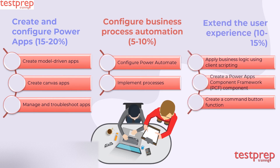Domain 5: Extend the user experience, which comprises 10 to 15 percent weightage in the exam. It includes: 1. Apply business logic using client scripting. 2. Create a Power Apps component framework component. 3. Create a command button function.